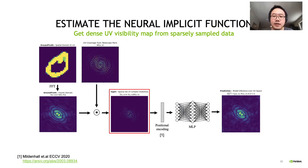The MLP takes as input the encoded UV coordinates and outputs the value corresponding to the input UV coordinate. Unlike the sparsely sampled visibility map, by feeding the dense UV grid into the neural implicit function, we can get a densely sampled visibility map.